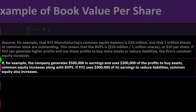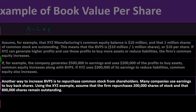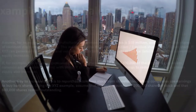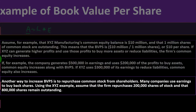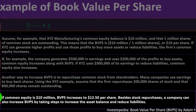If the company generates $500,000 in earnings and uses $200,000 of the profits to buy assets, common equity increases along with the book value per share. If XYZ uses $300,000 of its earnings to reduce liabilities, common equity also increases. Another way to increase BVPS is to repurchase common stock from shareholders, resulting in fewer shares outstanding. Using the XYZ example, assume the firm repurchases 200,000 shares and 800,000 shares remain outstanding. If common equity is $10 million, the book value per share increases to $12.50 per share. Besides stock repurchases, a company can also increase book value per share by increasing the asset balance and reducing liabilities.